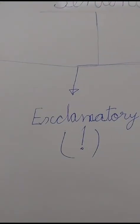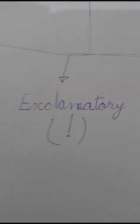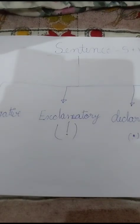An exclamatory sentence shows feelings and emotions. An exclamatory sentence ends with an exclamatory mark. The exclamatory mark is this. Some examples of exclamatory sentences are: Wow! That was an amazing sound! Wonderful! I have got 10 out of 10 in my test!